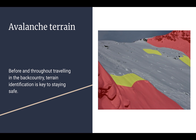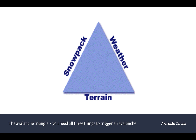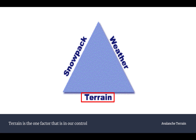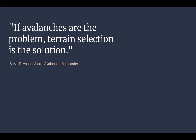Avalanche terrain is essentially terrain that can allow avalanches to happen, and it's really important to be able to identify that terrain and avoid it on days when you should, so you're not going to trigger an avalanche. This is called the avalanche triangle — you need all three things to trigger an avalanche: an unstable snowpack, weather that makes the snowpack less stable, and terrain that is steep enough or has other features that allow avalanches to happen. Terrain is the one factor in our control — we can't control snowpack stability or weather, but we can control what terrain we ski or ride.